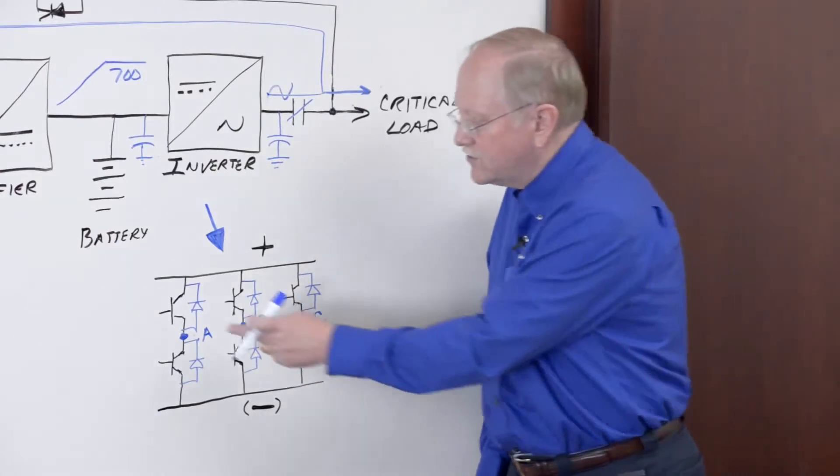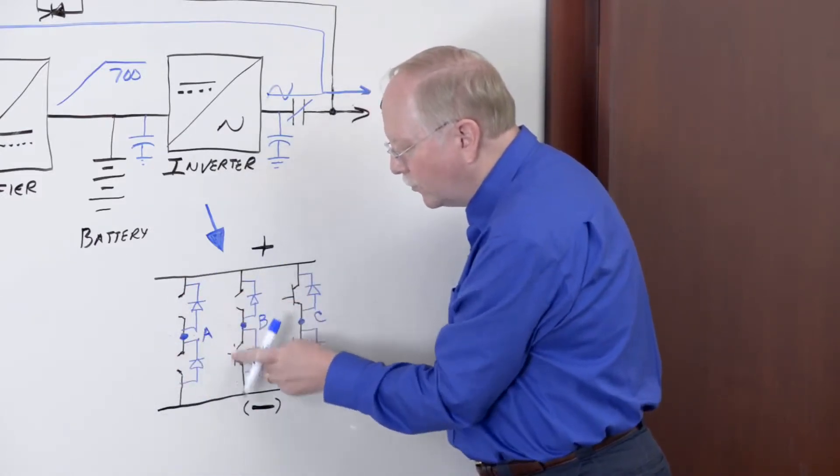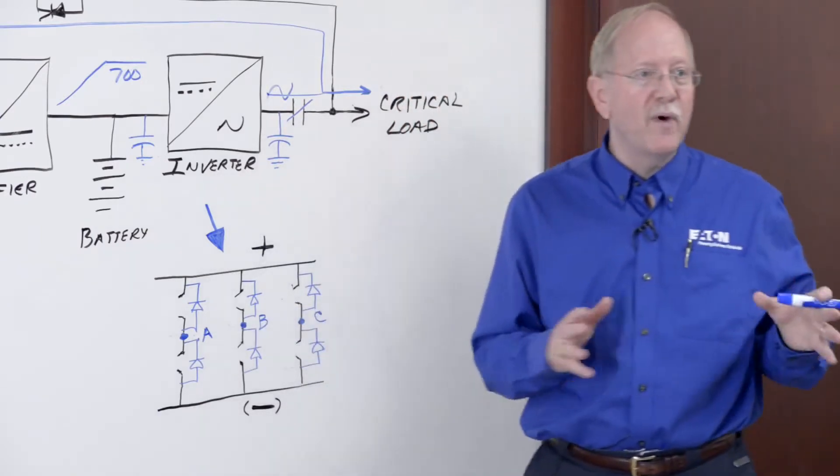But if I'm not gating those transistors when I'm suspended, the transistors disappear from the circuit. They're open switches, leaving me with six diodes in a bridge rectifier schematic.